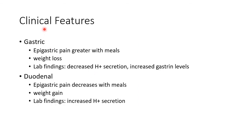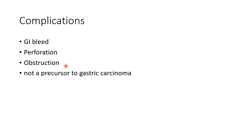Regarding clinical features, in the case of gastric ulcer there will be epigastric pain which increases with meals, and weight loss. Laboratory findings include decreased hydrogen ion secretion. In the case of duodenal ulcer, there will be epigastric pain which decreases with meals and weight gain. Laboratory findings include increased hydrogen ion secretion.